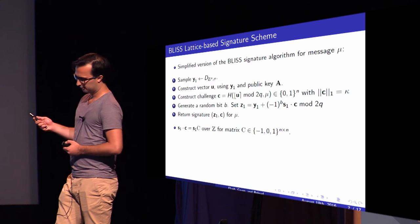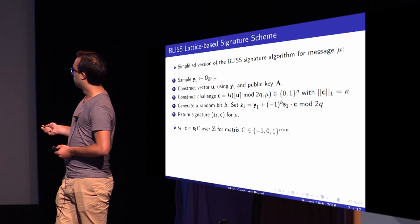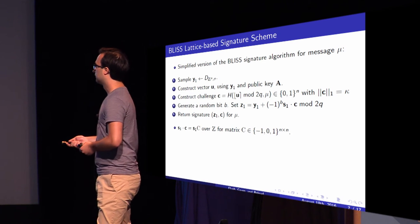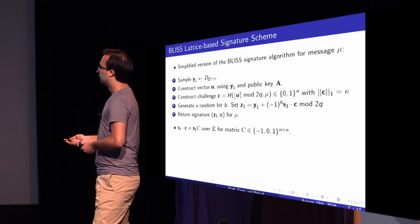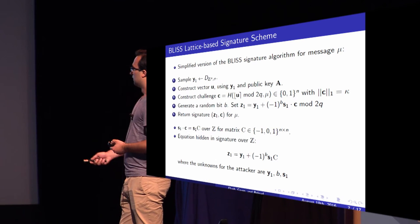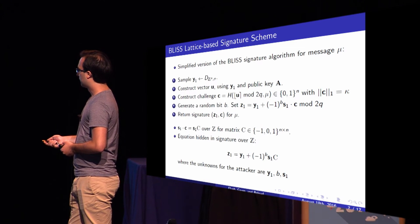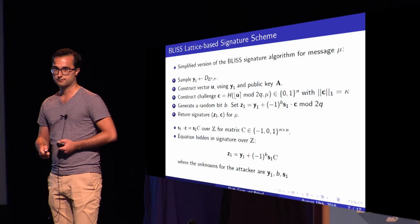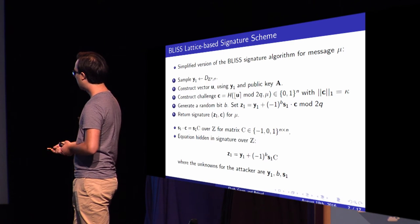Since the secret key S is sparse and the challenge C is also sparse and binary, we don't need to apply the modulo 2Q — this simply holds over the integers. Here C is the rotation matrix from the NTRU lattice construction of the challenge vector. So what we get eventually is an equation hidden in the signature over the integers: Z1 = Y + B·C_matrix·S. The unknowns to the attacker are the noise vector Y, the random bit B, and of course the secret key S.